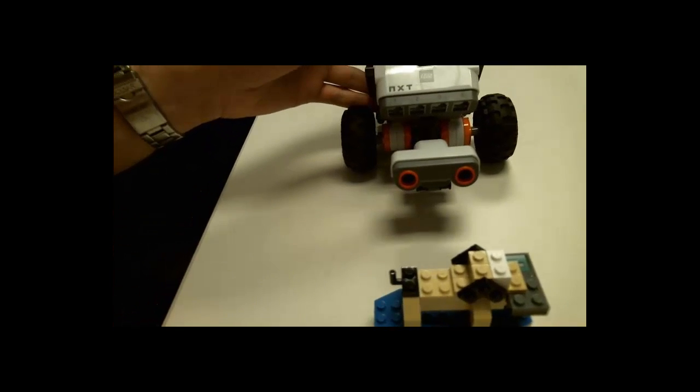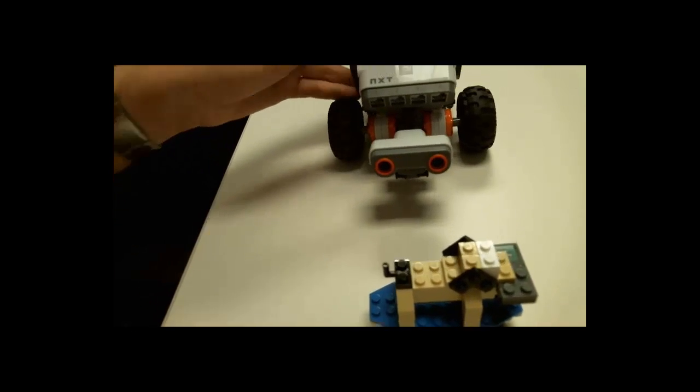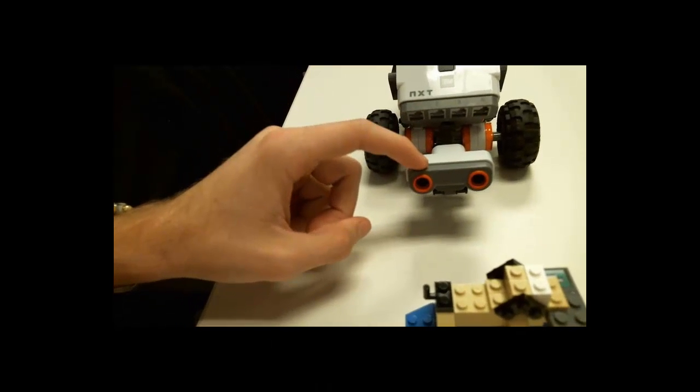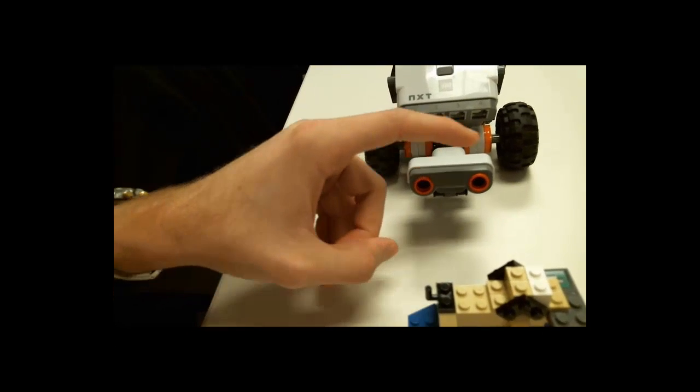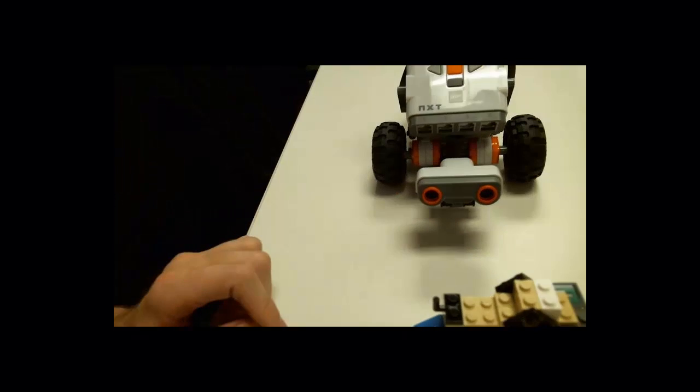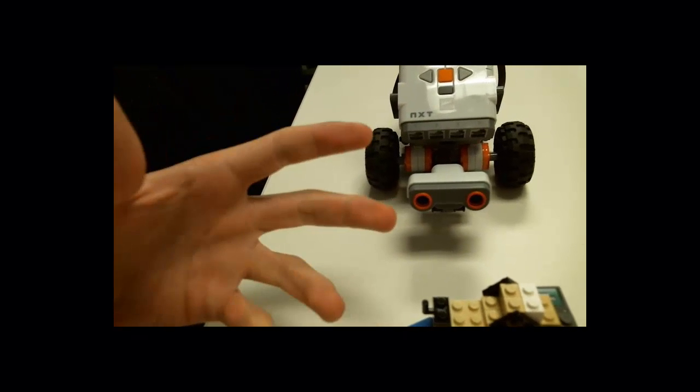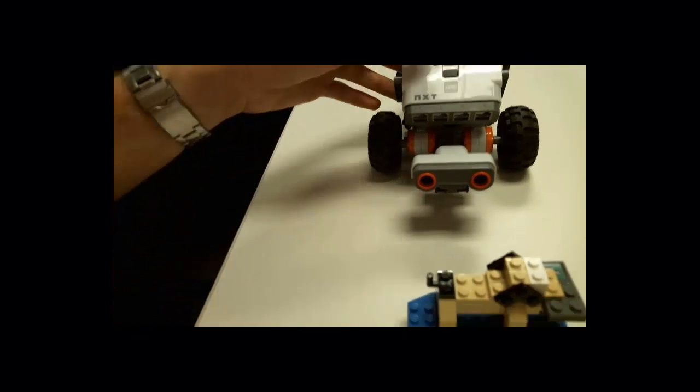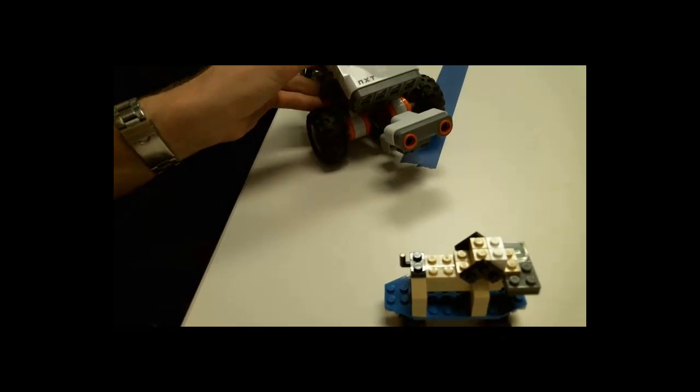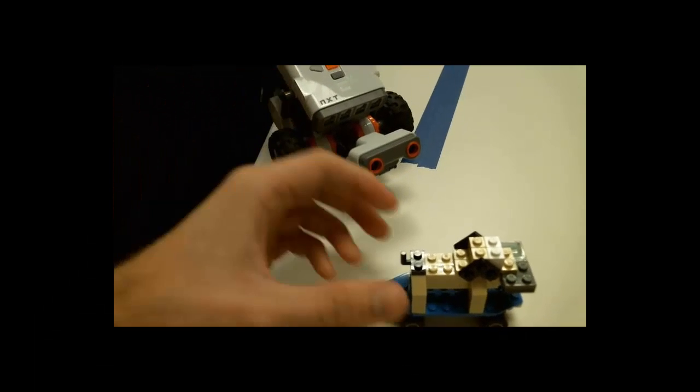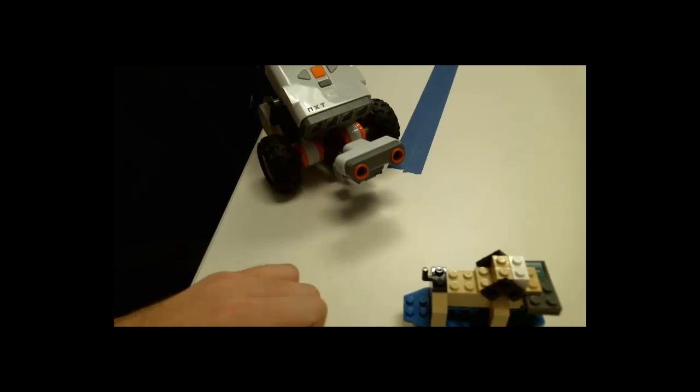But also another issue with the ultrasonic sensor is that since one of these ports emits the high frequency sound and the other one receives it, it can have trouble seeing something or judging a distance if it's at an extreme angle. So let's say I'm coming at the dog from like 45 degrees or more.